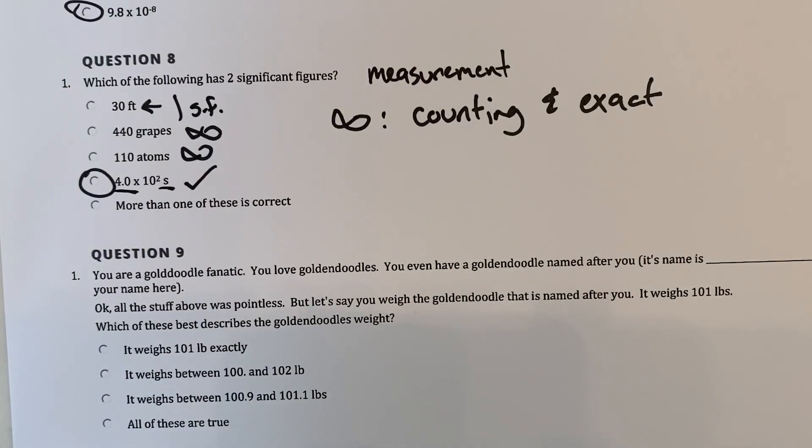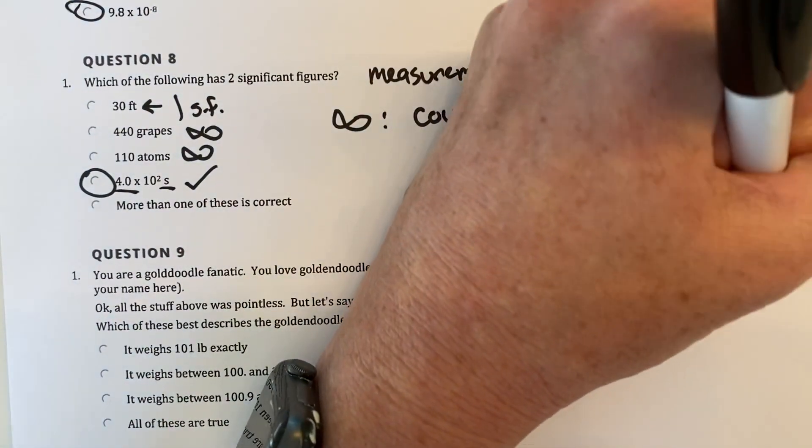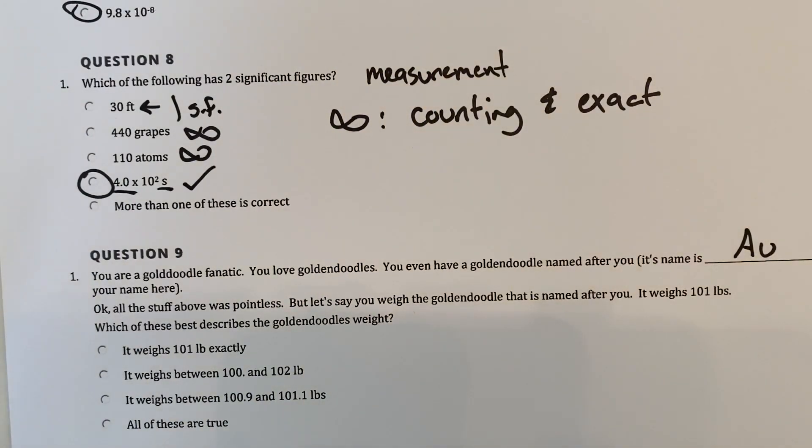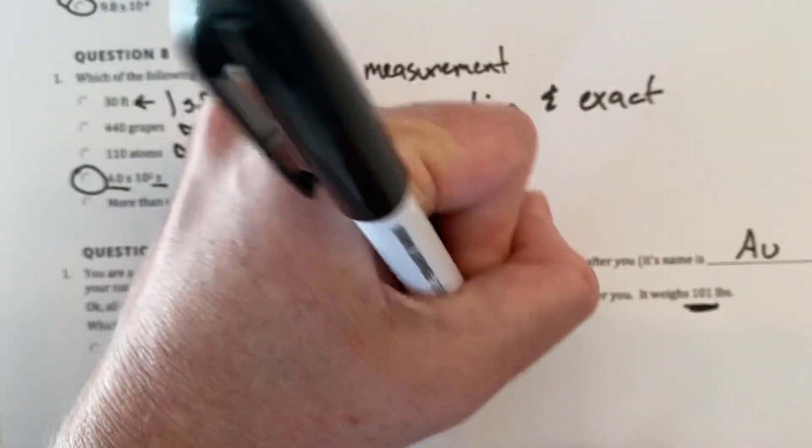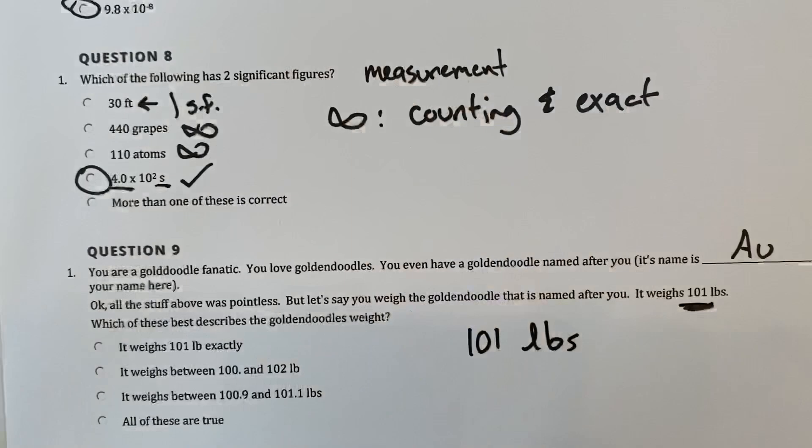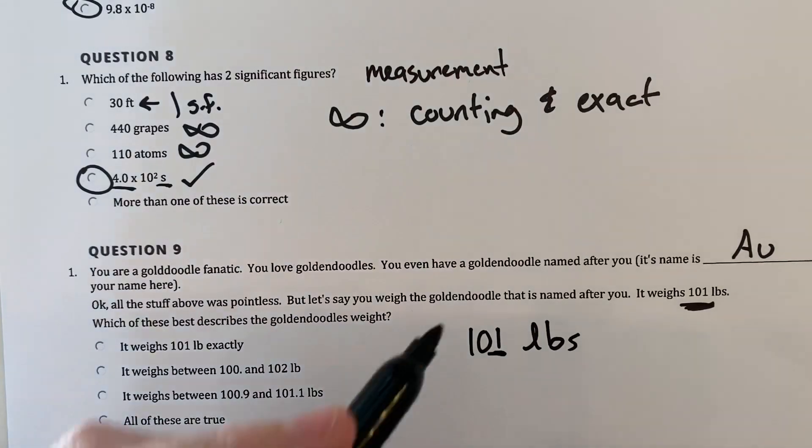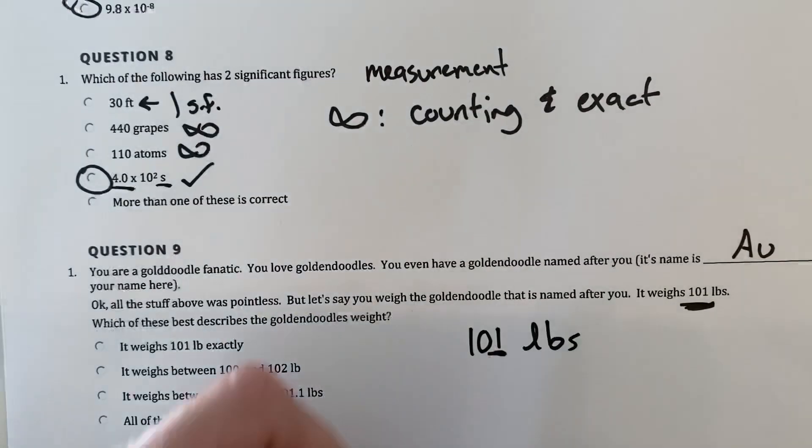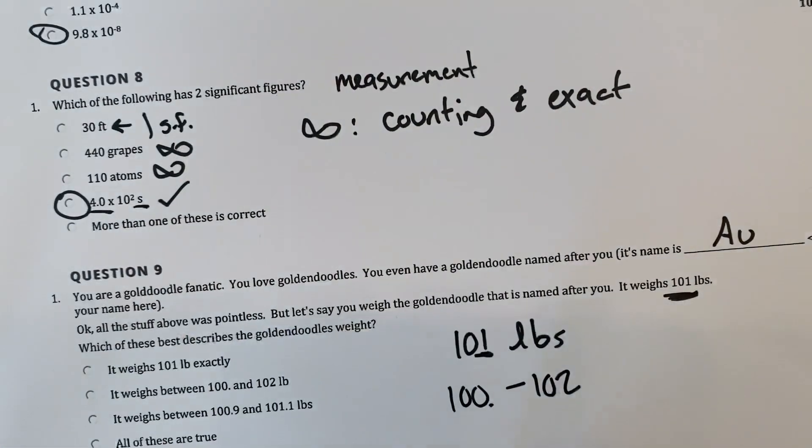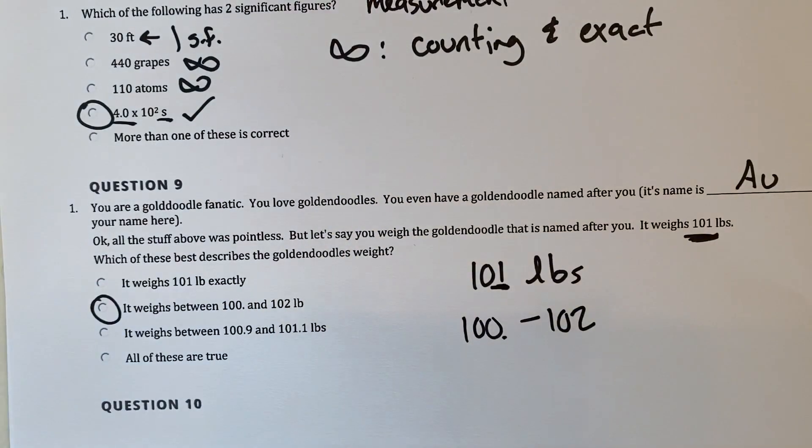Alright, question number 9. You are a golden doodle fanatic. You love golden doodles, which is funny. I have one, and I don't love golden doodles, but he's growing on me. Okay, so you even have a golden doodle named after you. Its name is, oh, for gold, if you didn't get that one. Okay, all the stuff above was pointless. That was annoying. But let's say you weigh the golden doodle that is named after you. Okay, it weighs 101 pounds. Which of these best describes the golden weight? Okay, so this is 101 pounds is a measurement. So this thing has three sig figs. Remember, you look at the last one, the last significant digit, and you add one and subtract one from that place. This is in the ones place. So we're going to add one and subtract one. 100 to 102 is the actual weight of that golden doodle. It's somewhere between there, and that's why that is your answer.